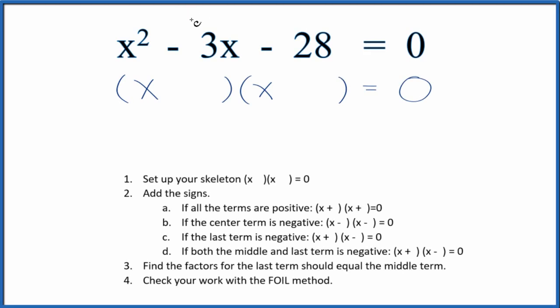If I was asked to factor this equation, x squared minus 3x minus 28 equals 0, this is how I'd do it. First of all, I'd set up a skeleton equation like this here to guide my work.